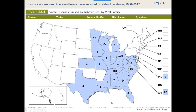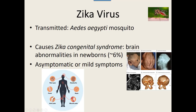The Zika virus is in the Flaviviridae group and is transmitted by a mosquito. Most adults are just fine with the virus. However, this is a virus that affects fetuses — it causes abnormalities, usually brain abnormalities, where it causes the skull to be deformed and brain tissue not to develop properly, in about 6% of cases in pregnant women who picked up this virus.